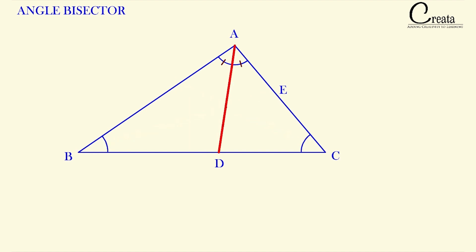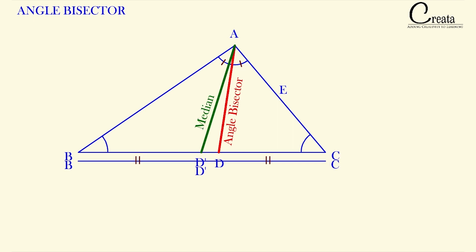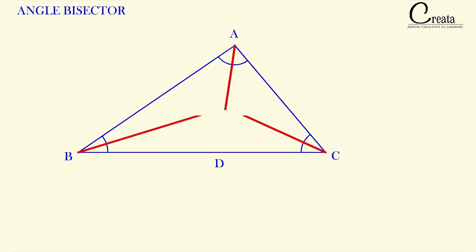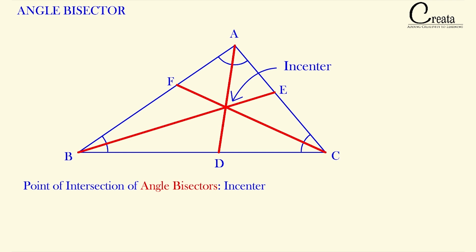Students should note that the angle bisector does not meet the midpoint of the opposite side — these two portions are not equal to each other, nor is this angle 90 degrees. An angle bisector only divides the angle into two equal portions. The line which divides the opposite side into two equal portions is the median. The three angle bisectors in a triangle intersect at a common point called the incenter, denoted by I. The point of intersection of the three medians is the centroid.